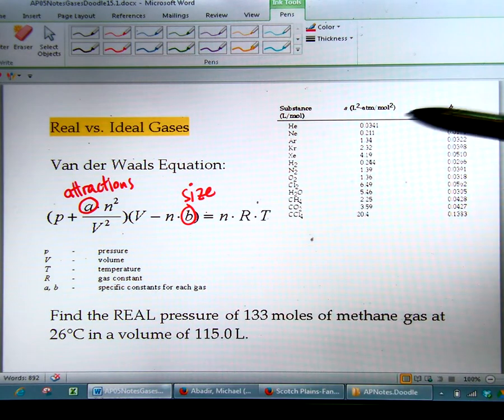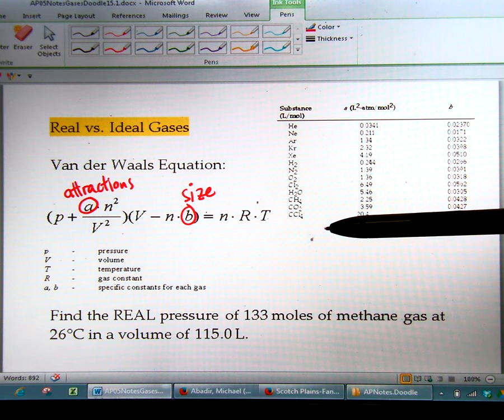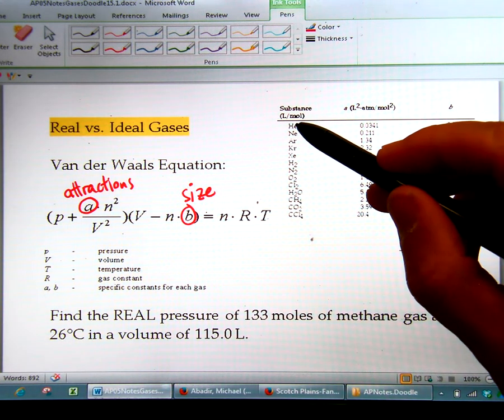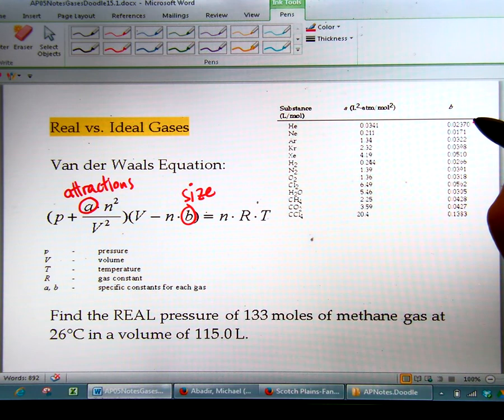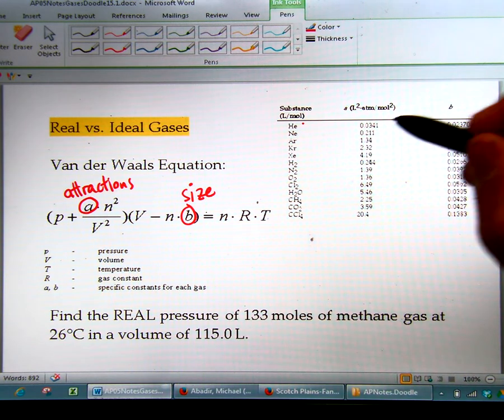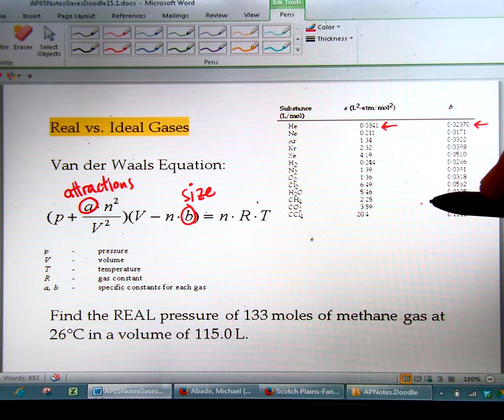So we have here a chart that lists the A values and the B values of various gases. Let's take a look at helium. Helium is a very small particle. So because it's small, it's going to have a pretty small value for B. Also, helium is nonpolar, so it has London dispersion forces, so its A value for attractions is also quite small.